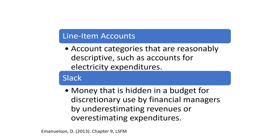Line item accounts can be thought of like your personal household budget. For example, you might have a category called 'utilities' that contains multiple line items: electricity, water, gas, telephone, and internet — all as different lines.